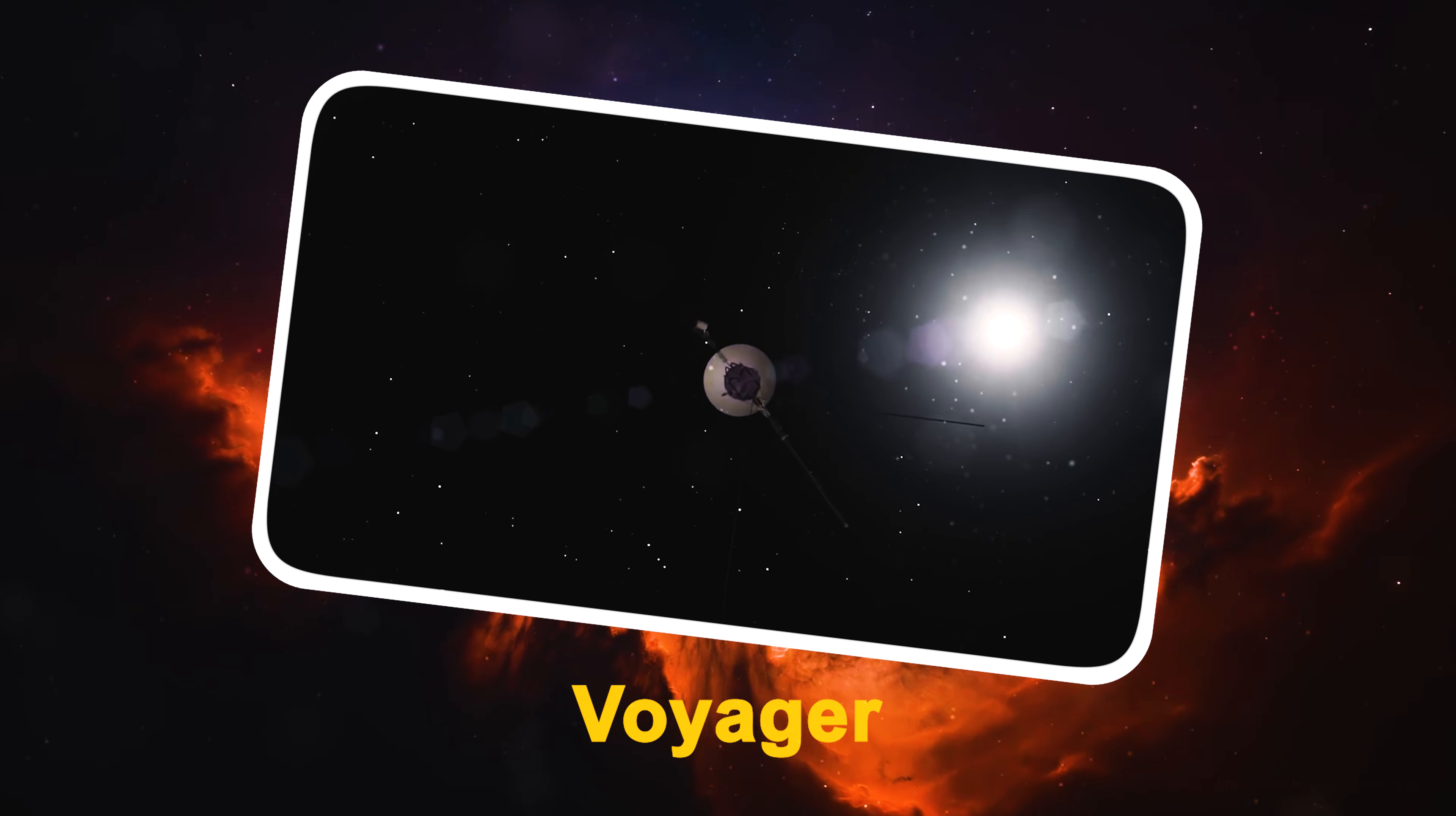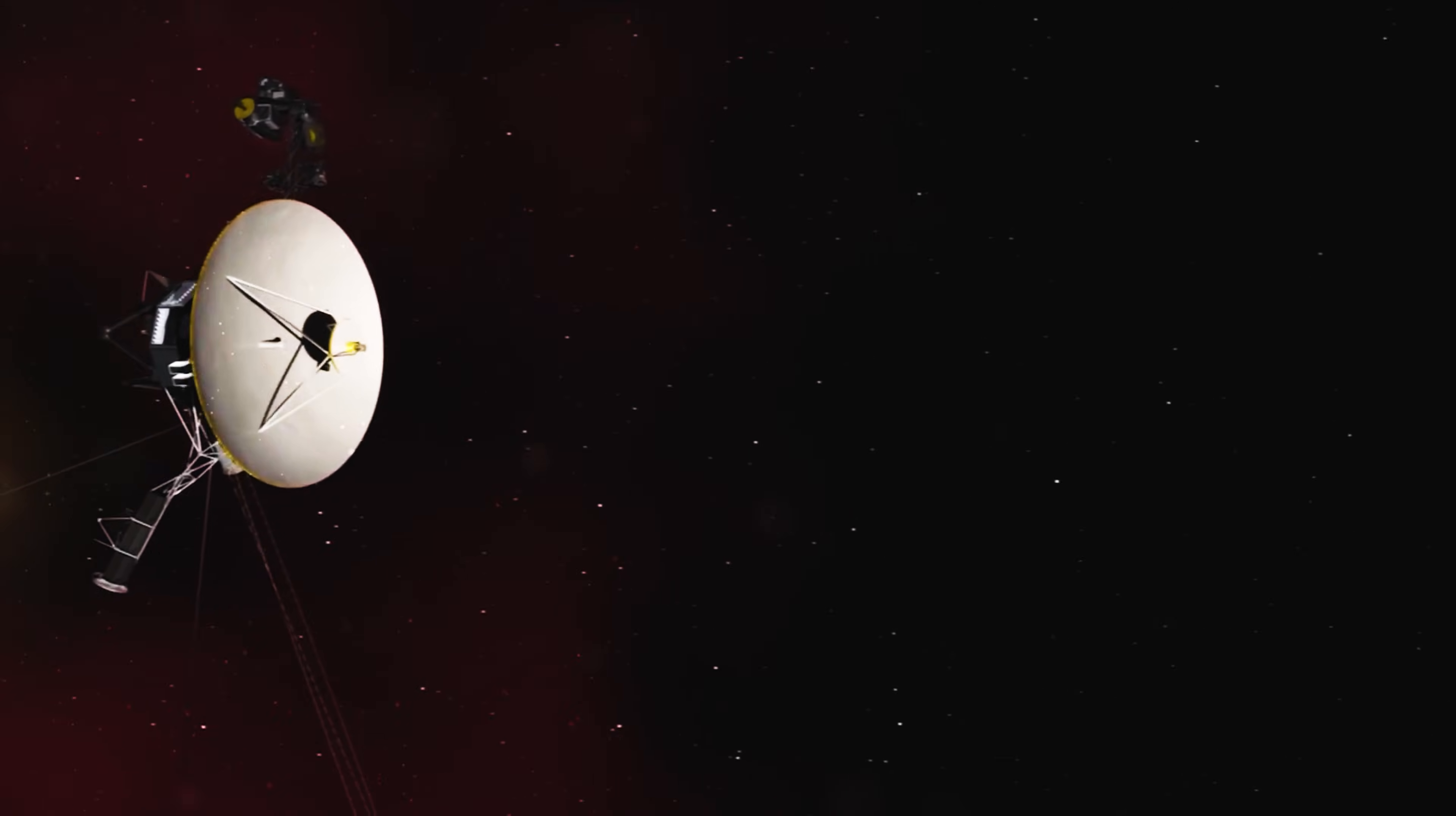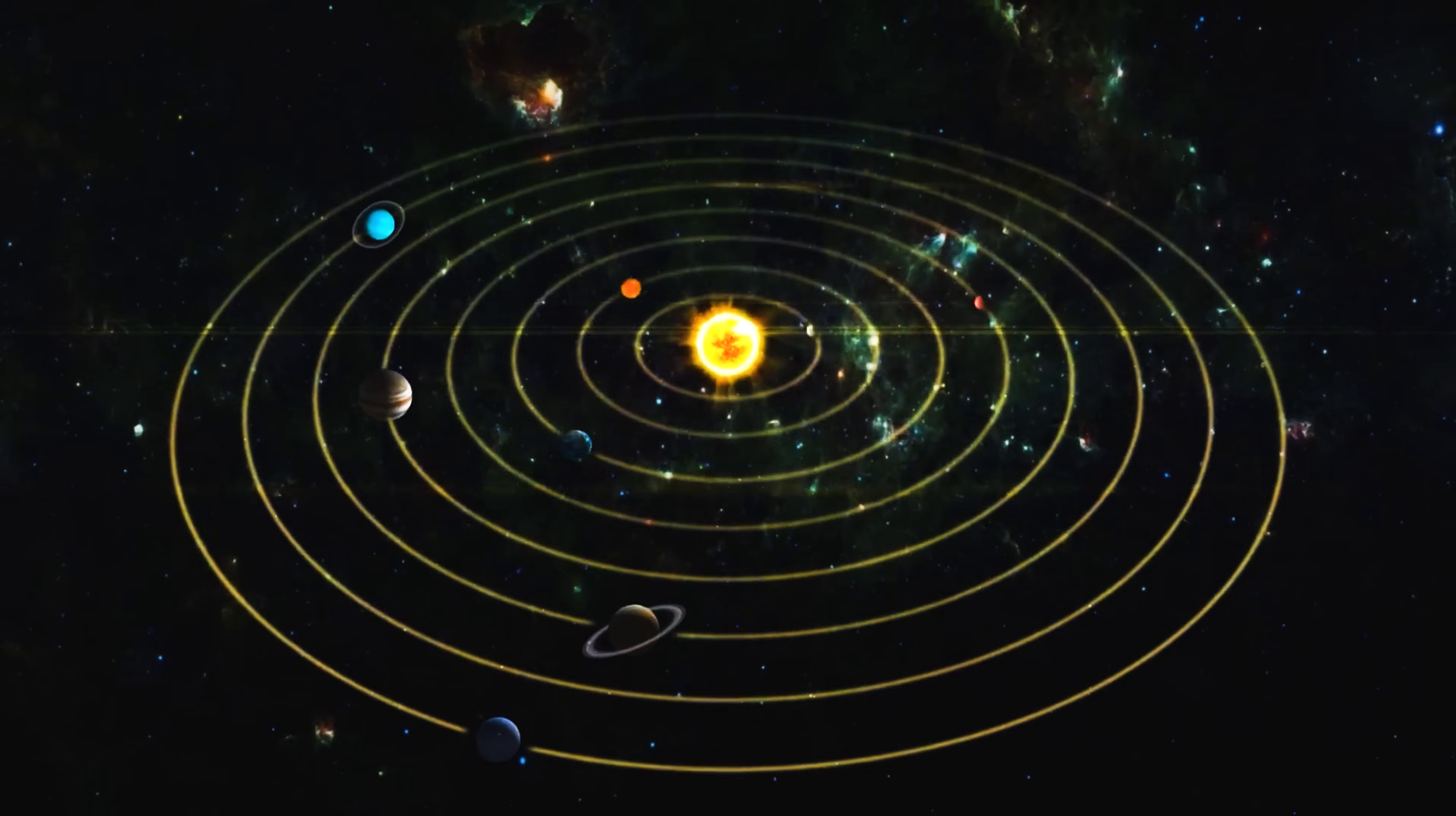Voyager is in a kind of cosmic borderland, a place that shouldn't feel like a boundary at all. Yet every reading coming back from the spacecraft insists that something out there is shifting, bending and behaving in ways scientists never expected.